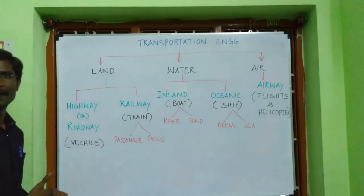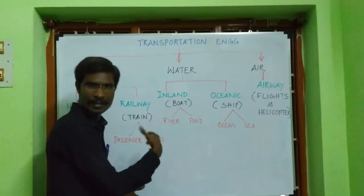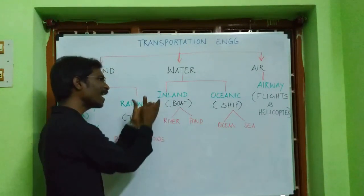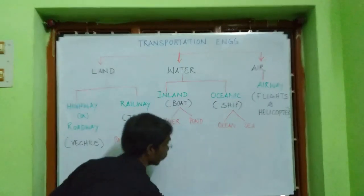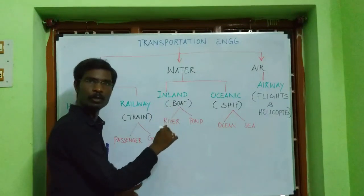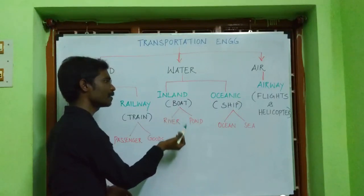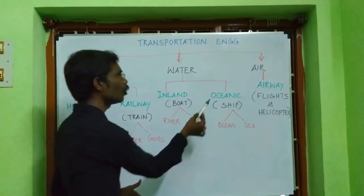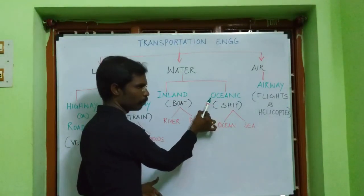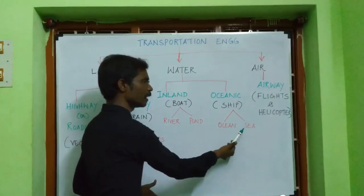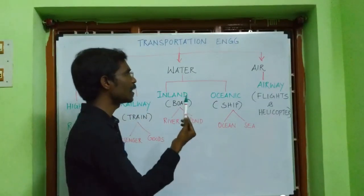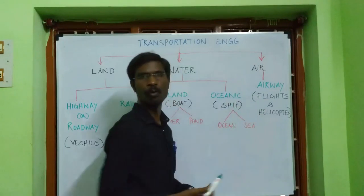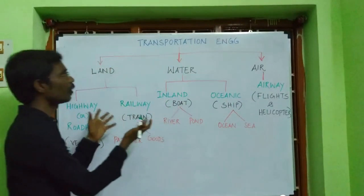The second mode is transportation by water, classified into two categories: inland water transportation — using rivers or ponds with boats — and oceanic water transportation — using oceans or seas with ships. The last mode is air transportation, which is an airway. In airway transportation, we use flights and helicopters. These are the different modes of classification of transportation.